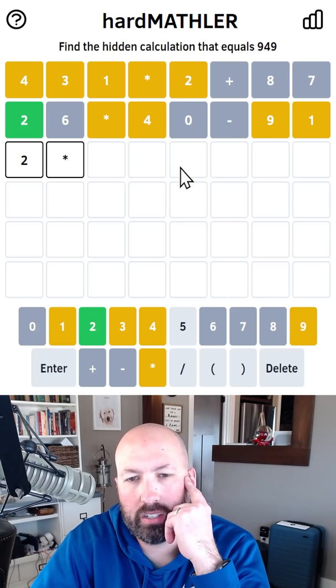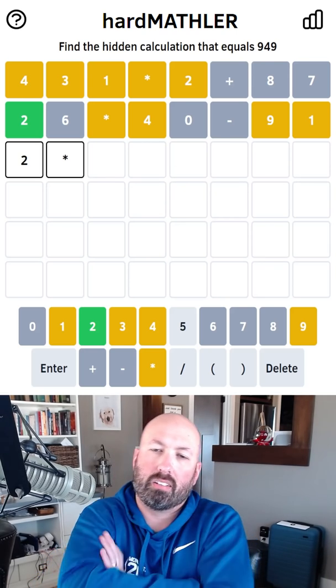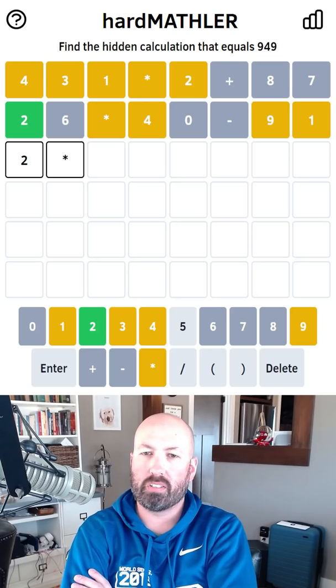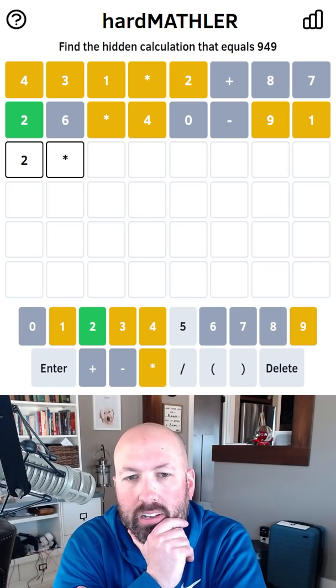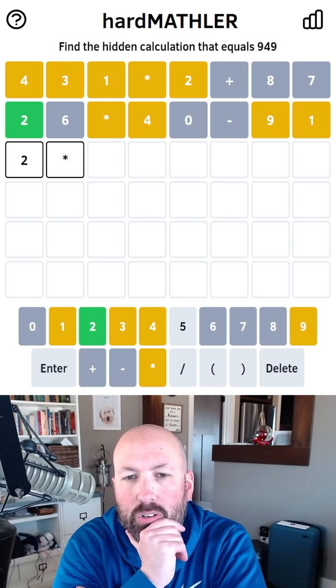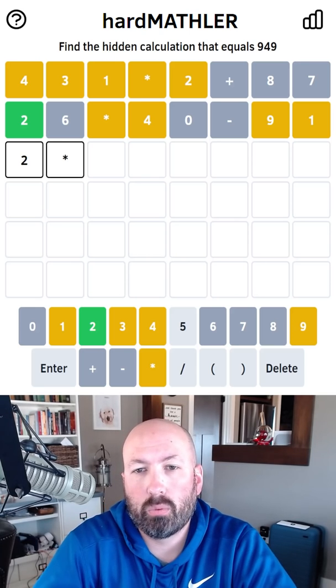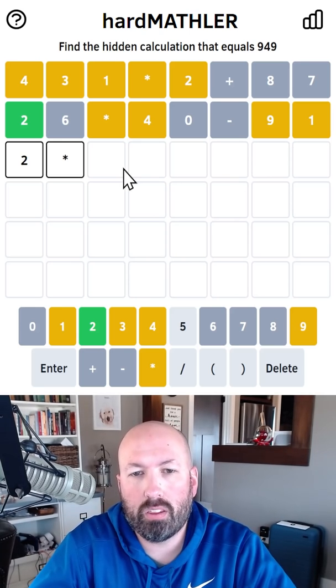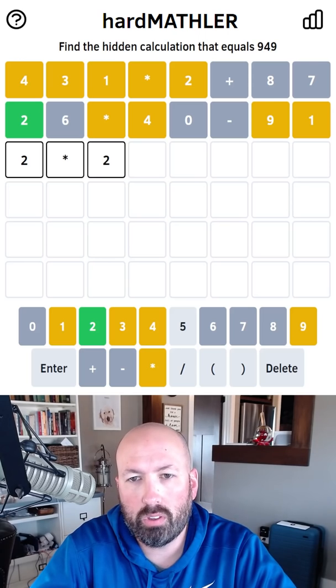But if we do 2 times a 3-digit number and then divide, we're dividing by a 2-digit number at the end. And 2 times a 3-digit number isn't going to get us big enough that we can then divide by a 2-digit number to get back to 949. So maybe 2 times a 4-digit number, that's possible. But it can't be 1000 and something because the 1 can't be right here, so it would have to be like 2000 and something.